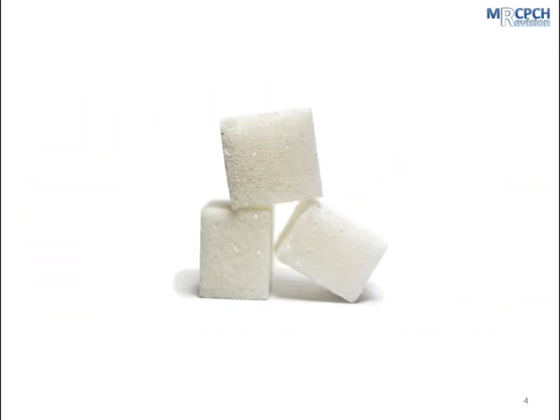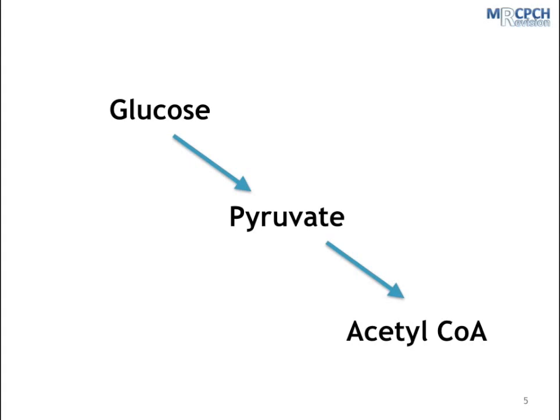The main substrate is glucose, and this can come from various sources. But let's start by just looking at what happens to each glucose molecule. So one glucose molecule is metabolized to form two pyruvate molecules. This is then further processed and produces acetyl coenzyme A. Now, acetyl coenzyme A is important because it's a cofactor in the Krebs cycle.